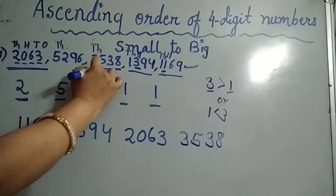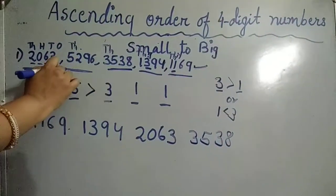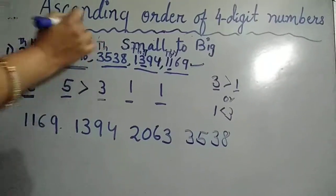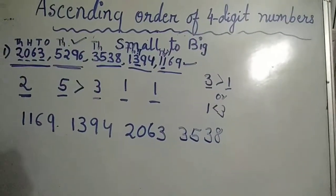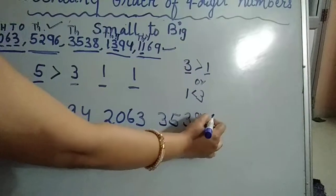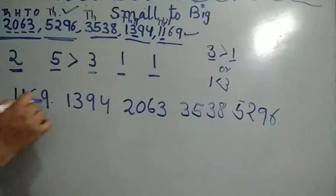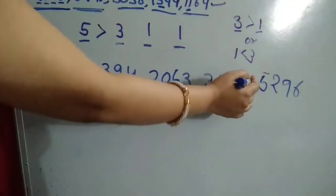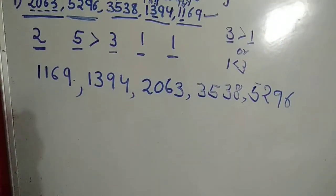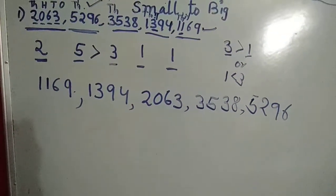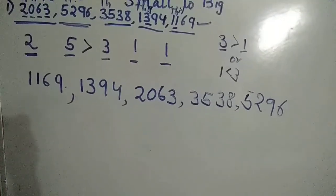And the remaining number, the biggest number of all these five numbers, is 5296. So this is the ascending order of four-digit numbers. Hope you all understood. Thank you.